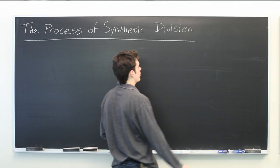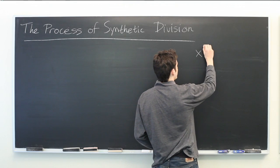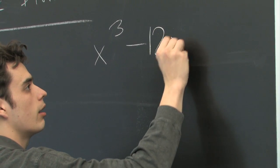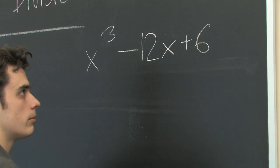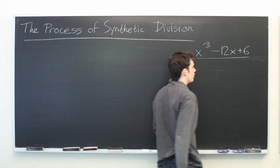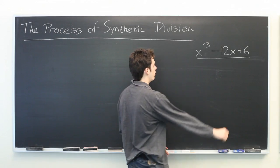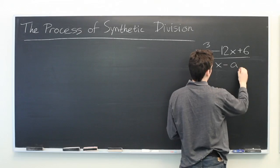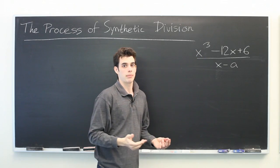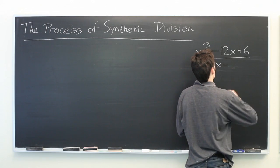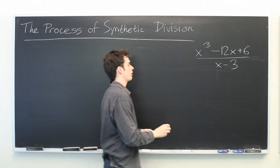So suppose that we're given some polynomial, let's say x cubed minus 12x plus 6. And we're going to divide that by some monomial of the form x minus a, where a can be any constant. Here we're just going to do 3 to make our lives a little easier.